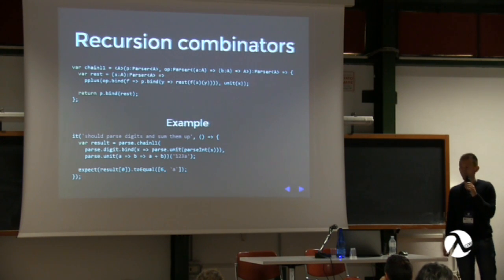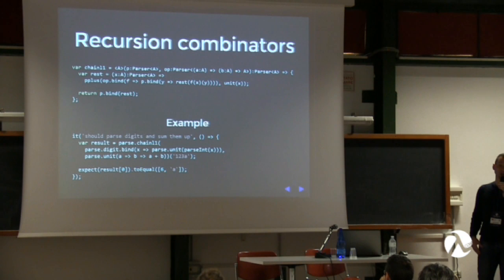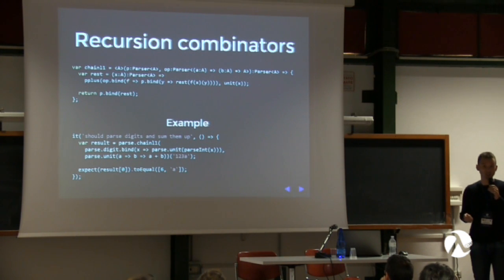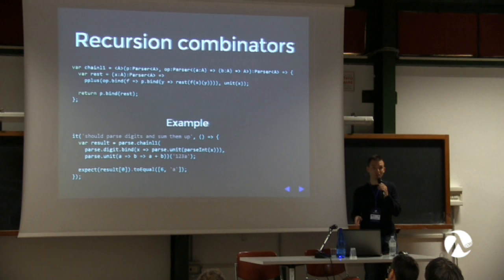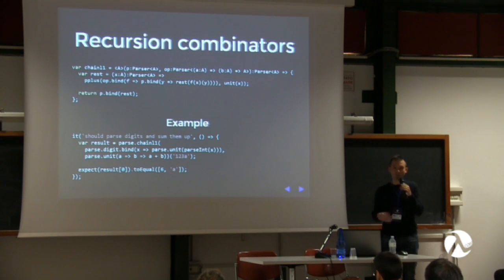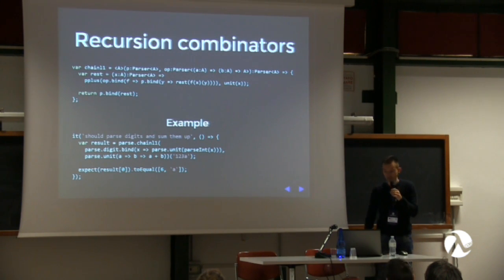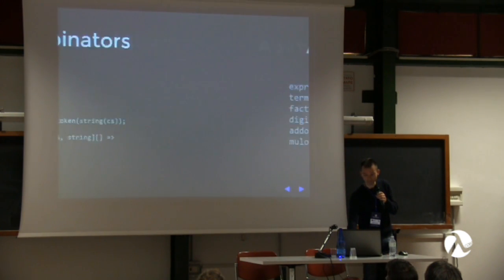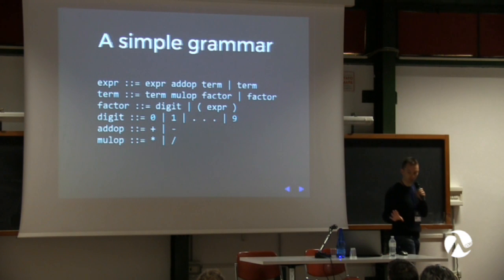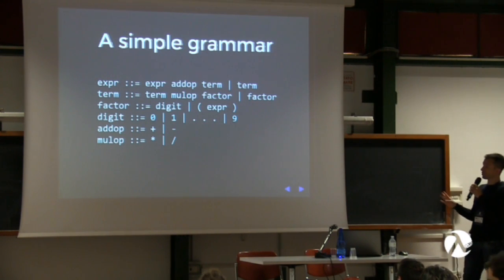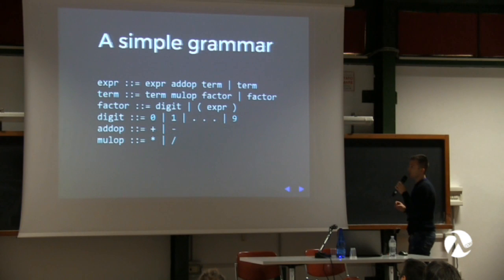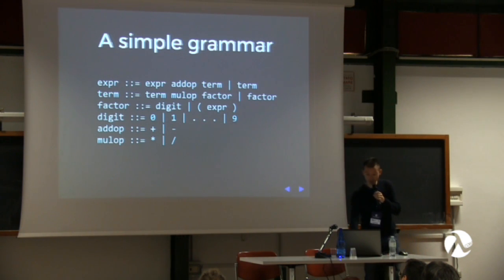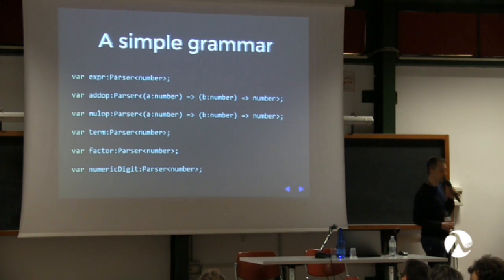So the generic argument of a parser determines its return type. We can return just a function — and when we implement the grammar, whenever we encounter a plus we return a function that sums numbers, and so on for other arithmetic operators. Let's look at a simple arithmetic grammar: single digits, the usual operators — plus, minus, star for multiplication, and division — and brackets.